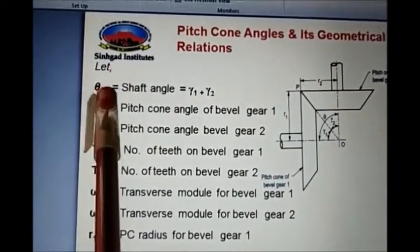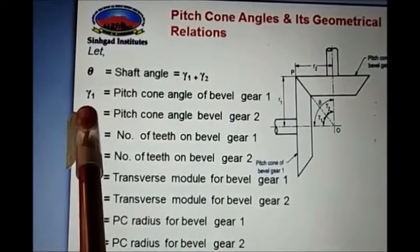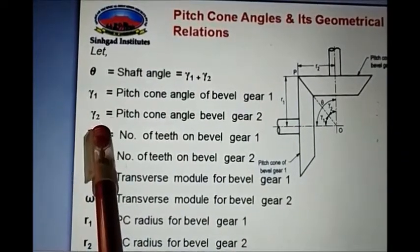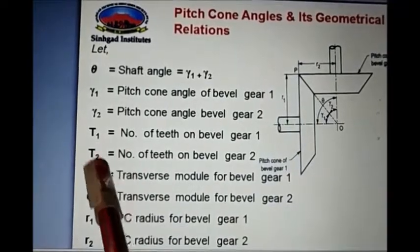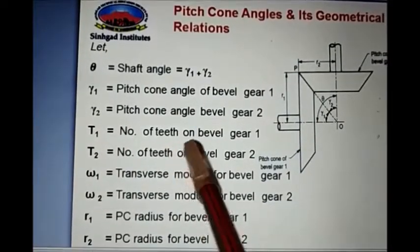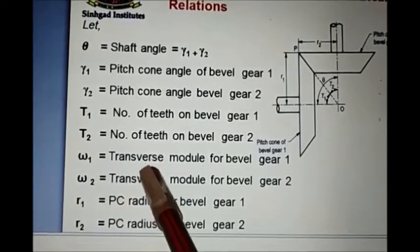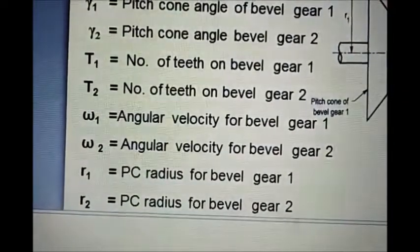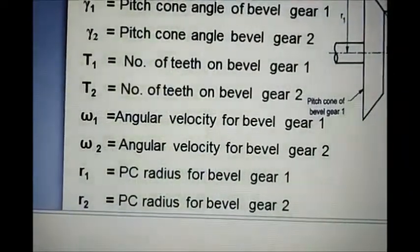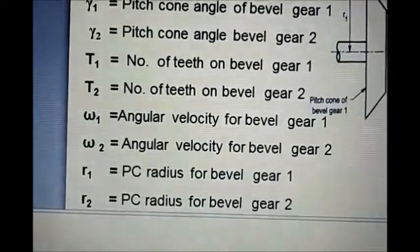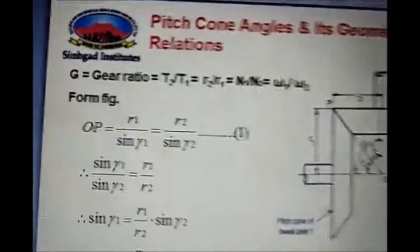Let's review the nomenclature. Theta is the shaft angle, equal to gamma 1 plus gamma 2. Gamma 1 and gamma 2 are the pitch cone angles of bevel gear 1 and 2. T1 and T2 are the number of teeth of gear 1 and 2. Omega 1 and omega 2 are the angular velocities of gear 1 and 2. R1 and R2 are the pitch circle radii of bevel gear 1 and 2.